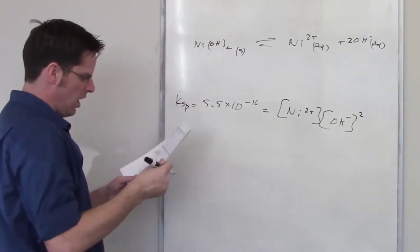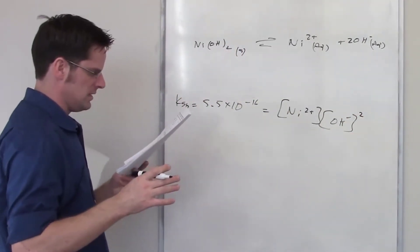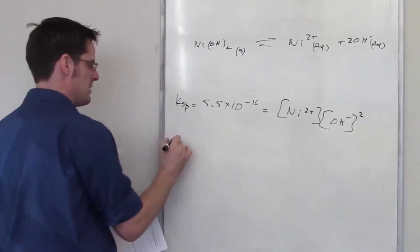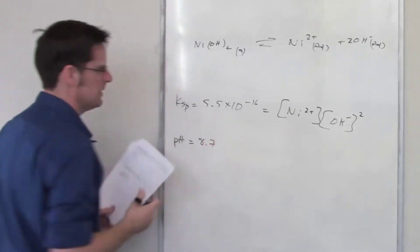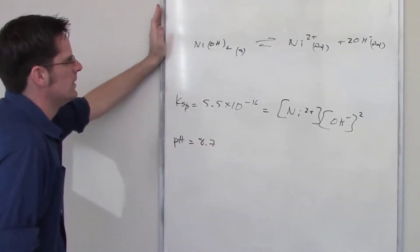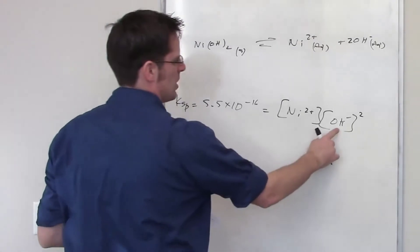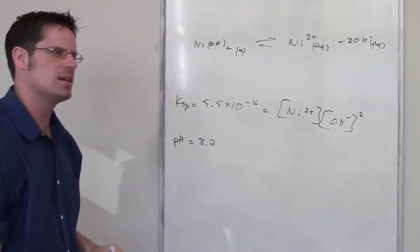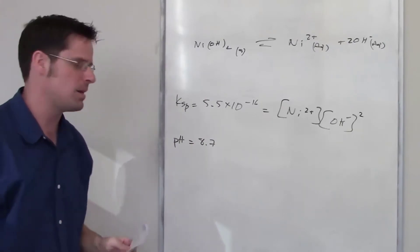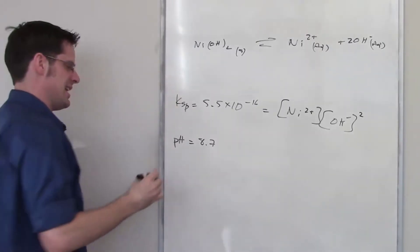So it also tells me that I've got a pH of 8.7. pH is 8.7. What can I do with that? Can I somehow figure out what the hydroxide concentration is going to be at pH 8.7? Can I do that? I think I can, but I have to use a couple of equations.